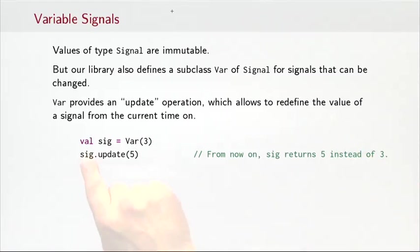So if we look at this example here, we define sig to be a Var(3). So that's a signal that for now is always the constant three until the point where I define an update operation on that signal. From that point on, it will always be five until of course there's a next update operation may be happening in the future.